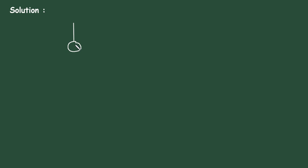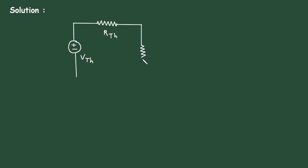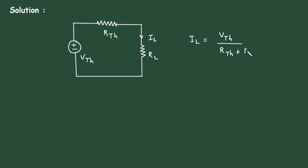Solution: In case of Thevenin's theorem, what we do is we convert the whole circuit into Thevenin's equivalent circuit — that is Thevenin's voltage in series with Thevenin's resistance. This will be our Vth (Thevenin's voltage), this will be our Rth (Thevenin's resistance), and here this will be our load resistor RL. The current IL is equal to Vth divided by (Rth plus RL). This is our Thevenin's equivalent circuit.